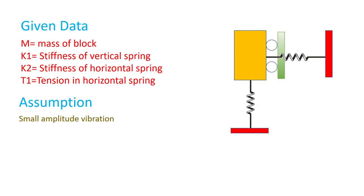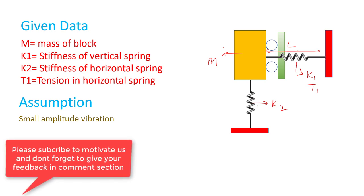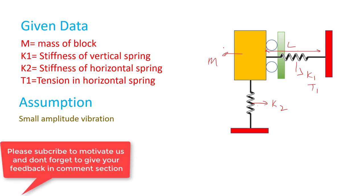The given data for this case is that the block mass is M, the stiffness of the first spring is K2, the stiffness of the second spring is K1, and it is initially subjected to some tension T1. The length of this spring is L. The first assumption we are going to make is small amplitude vibration, meaning X divided by L will be very small compared to one.